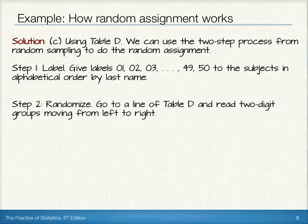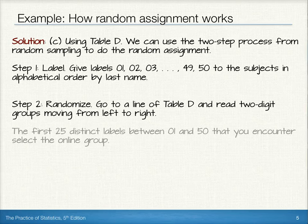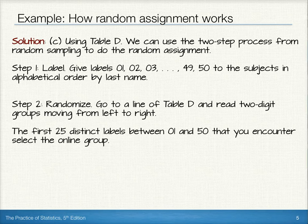Then we'd randomize. We could go to a line of table D and read two-digit groups moving from left to right across the row. The first 25 distinct labels between 01 and 50 that we encounter would select the online group. Remember, we'd have to ignore repeats and we'd also have to ignore any numbers that fall outside of the 01 to 50 range.